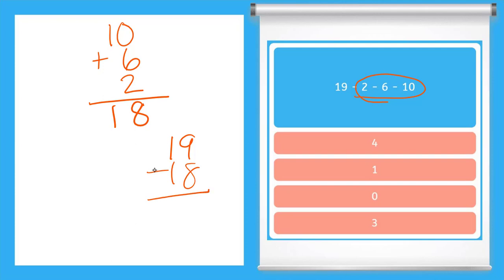Then 9 minus 8. 9 minus 8 is 1. 1 minus 1 is 0. So my final answer is 1.